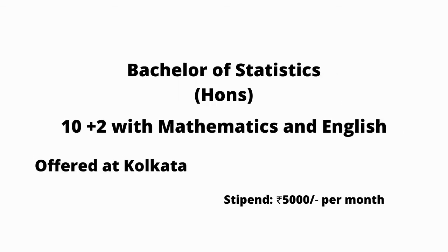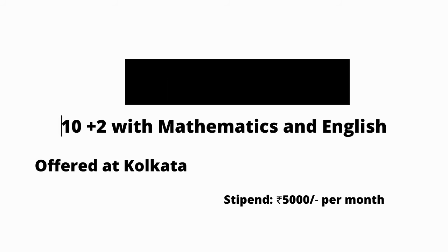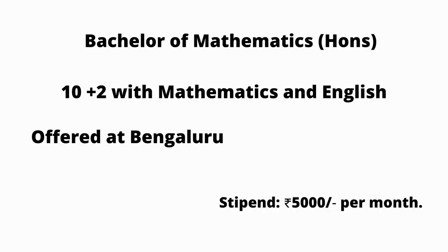The Bachelor of Statistics is a 3-year program. It is offered at the Kolkata campus, and the stipend amount is Rs. 5000 per month. Bachelor of Mathematics Honours — the eligibility criteria is 10+2 with Mathematics and English subjects. It is offered at the Bangalore campus, with a stipend of Rs. 5000.